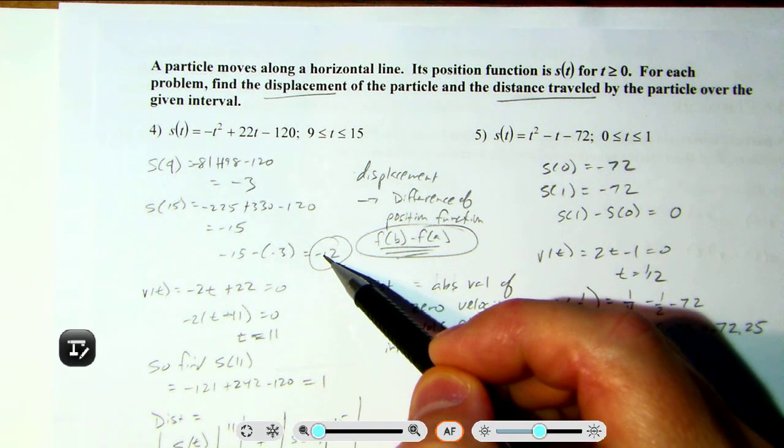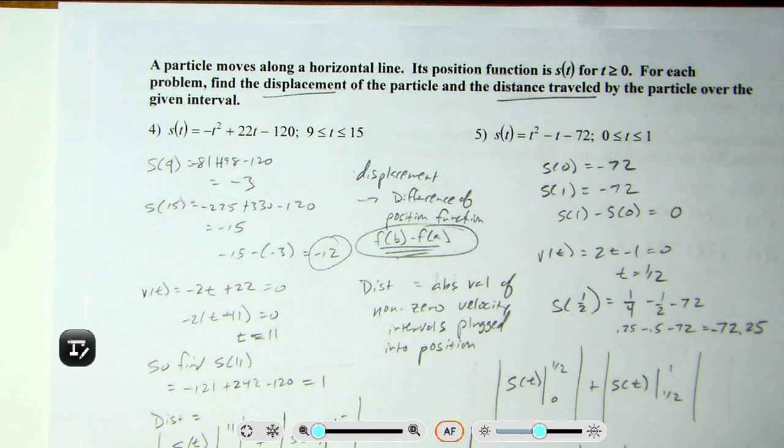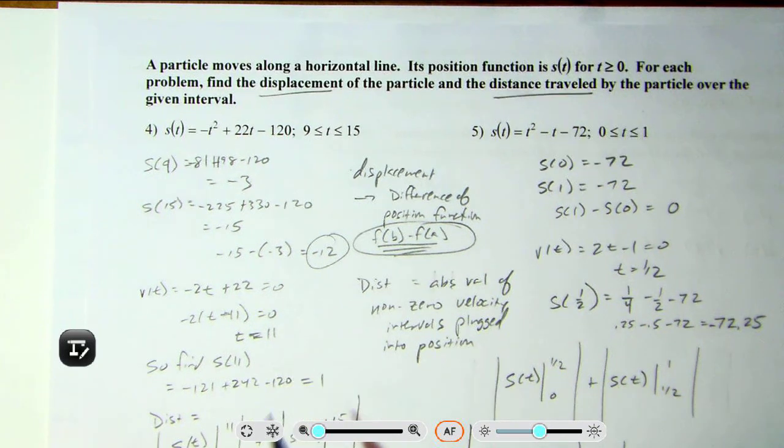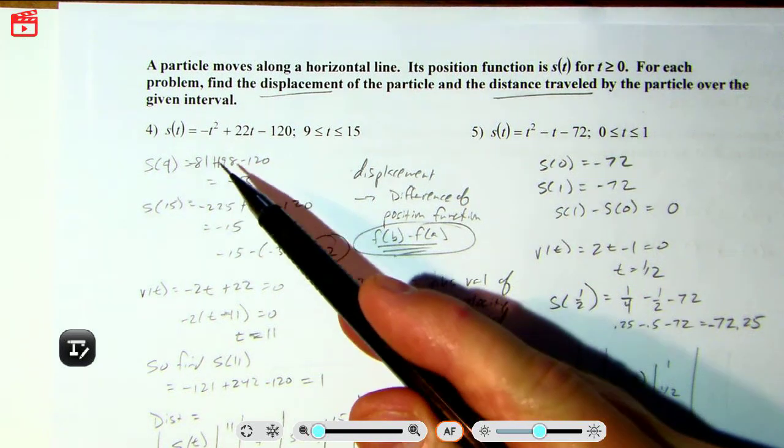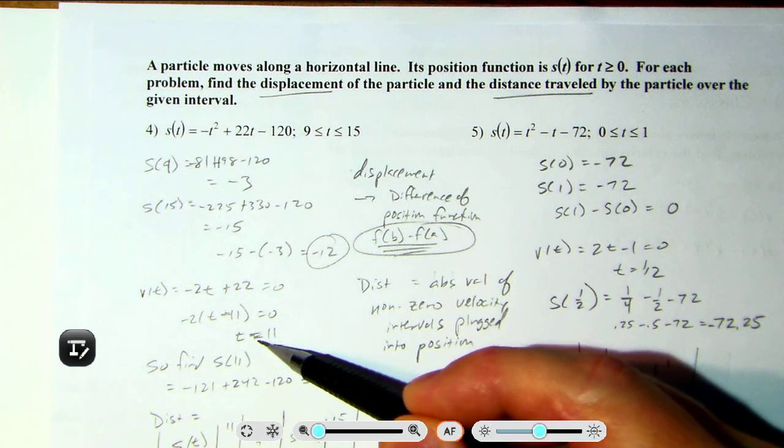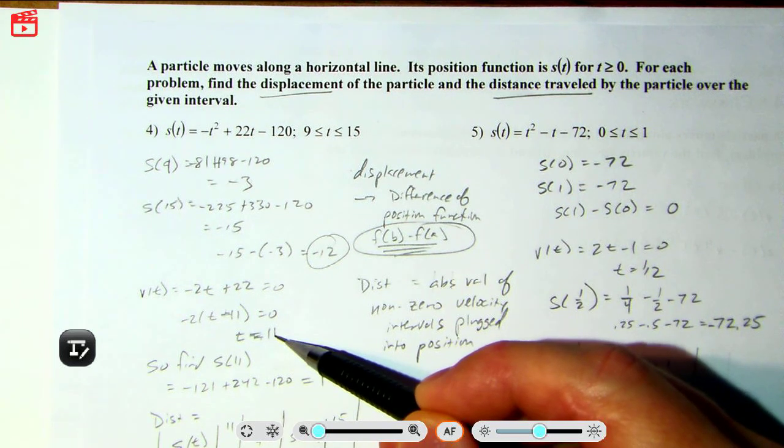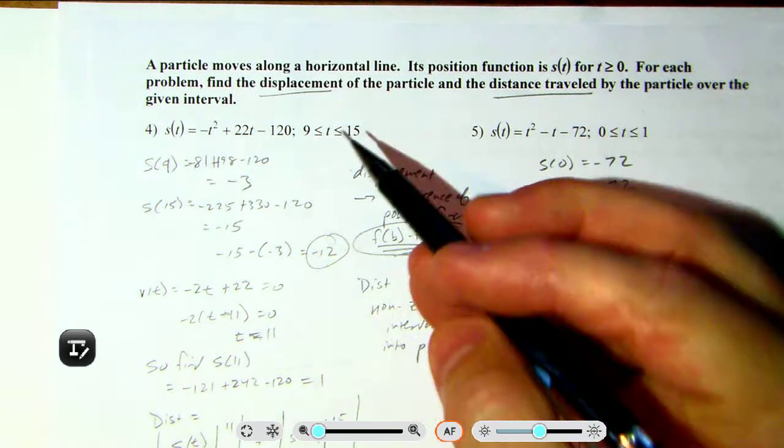All right, then we need to find the velocity. You have to take the derivative of this and then set it equal to 0 and say, hey, the velocity is 0 at 11. So what does that mean? We want to have the nonzero intervals, so we know this position, this thing is moving from negative 3 to negative 12.